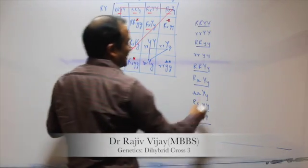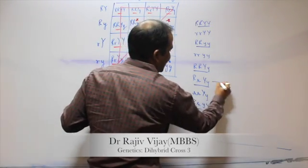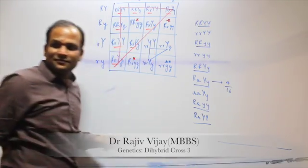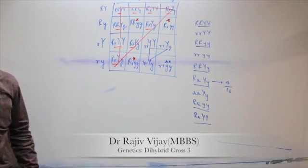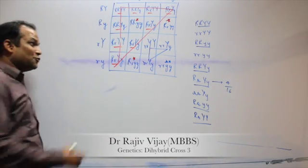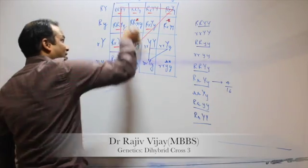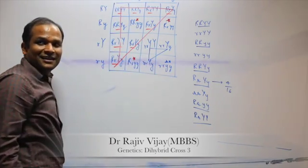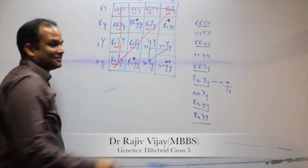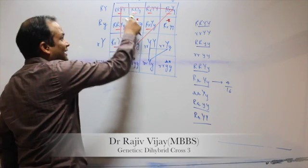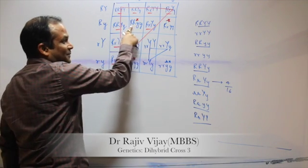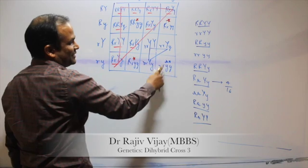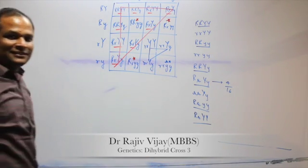This is the variety of 4 by 16. There is no other way. It's made a cross. It's all one. Capital R, capital Y, capital Y, capital R, capital Y, small y, small r, capital Y, capital Y, small r, small r, small y.